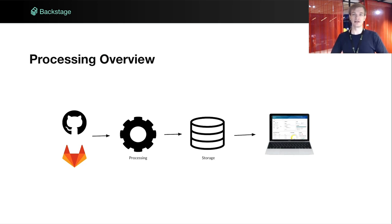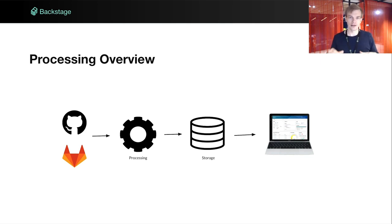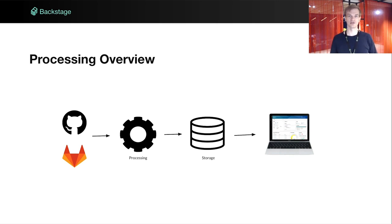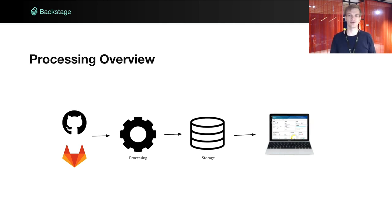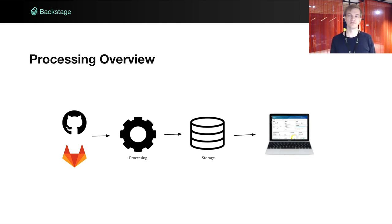Now let's look at the machinery that takes care of all these registered locations and makes them available for consumption. At the core of the catalog is a set of pluggable processors. In a typical setup, the catalog will cycle through these locations to read YAML straight from repositories. It's important to note that the catalog itself is not the source of truth — it serves as a collector and cache of information. However, processors can do much more than just reading YAML. They can handle validation or call out to external systems to decorate or even generate new entities. The catalog does give you a default set of processors, but writing your own is a key point of customization when adopting Backstage.